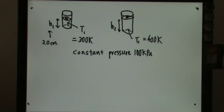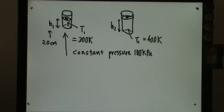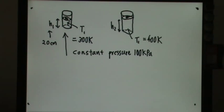Looking at this diagram, it says that initially the piston is at a height of 20 cm when the temperature inside the vessel is 300 Kelvin, and the pressure is constant at 100 kilo Pascal. So we don't have to worry about the pressure, because after the chamber or vessel has increased its temperature from 300 Kelvin to 400 Kelvin, the piston actually moved upward.